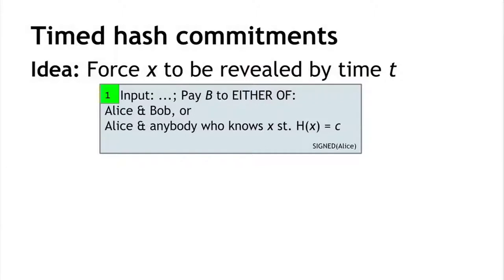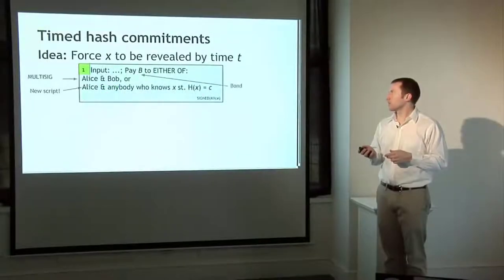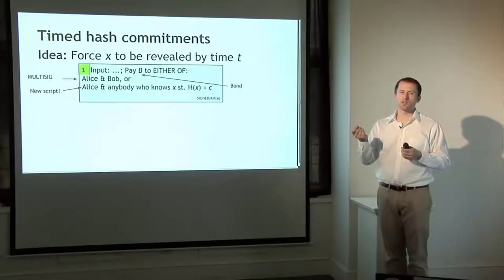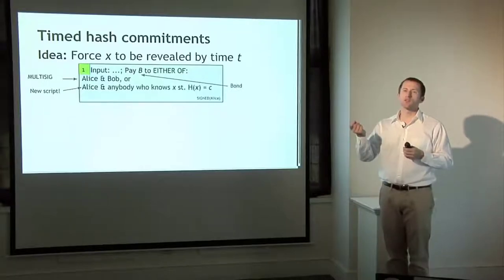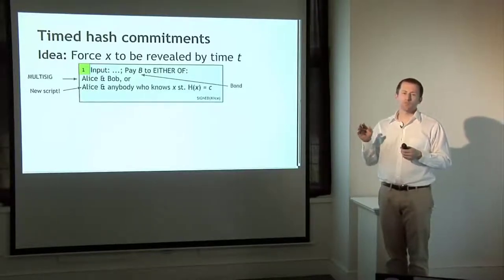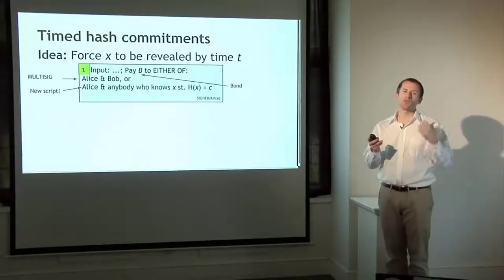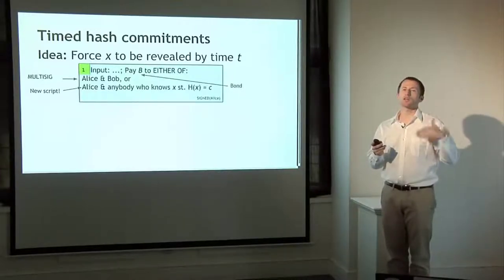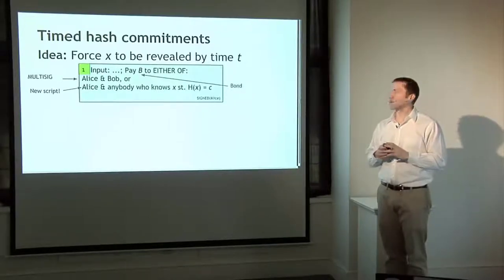What we'd like is a scheme to force the party who's committed to a value to reveal it within a certain time. Bitcoin provides a mechanism for this. The idea is a timed hash commitment: Alice puts up a bond with a transaction that can be claimed in two ways — either Alice and Bob both sign to claim the bond, or Alice signs and reveals her data x. You can check in a Bitcoin script that there's a value in the redemption script with a certain hash, meaning Alice must reveal her chosen value to claim the money herself.